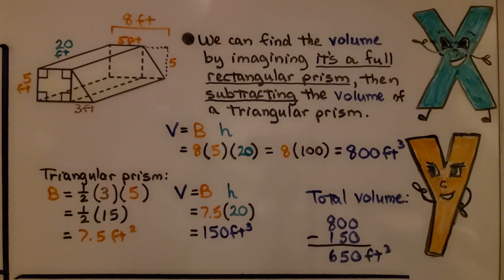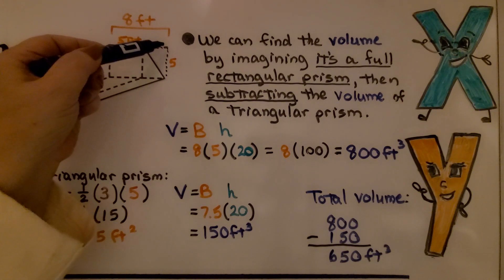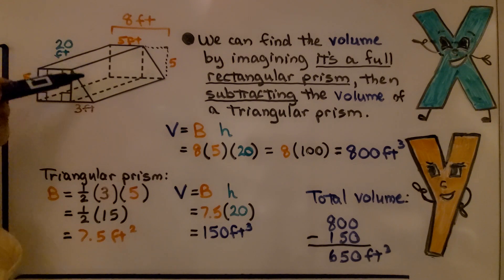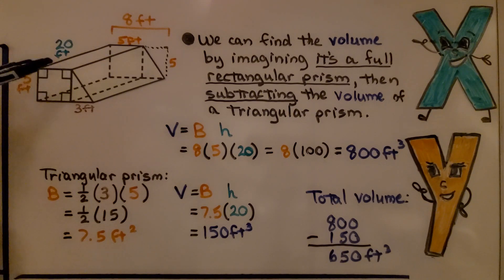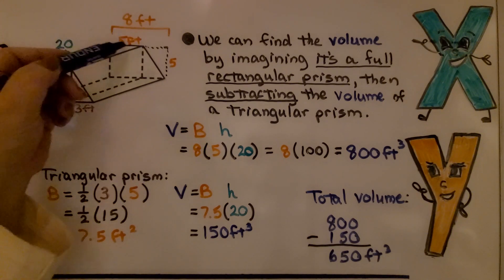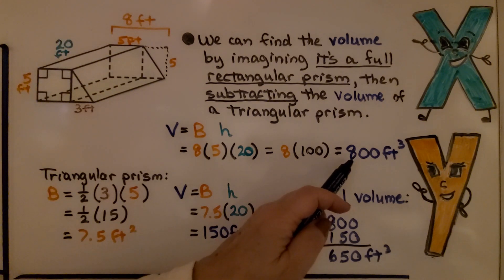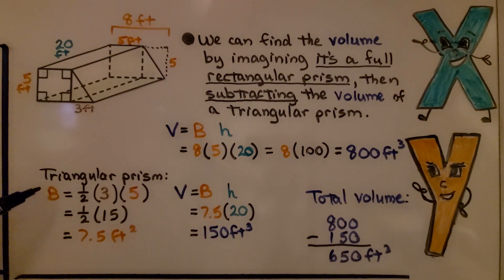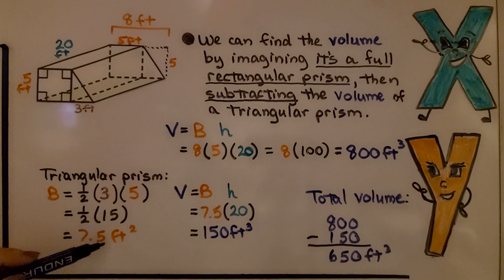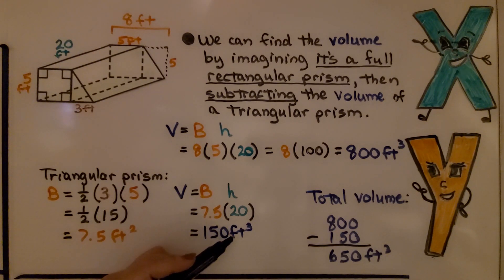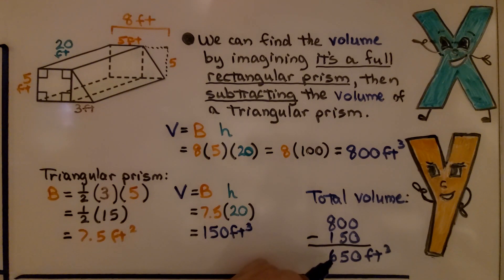We can also find the volume by imagining it as a full rectangular prism and subtracting the triangular prism. If both sides came all the way out, we'd have one big rectangular prism. With five plus three equaling eight across, times five, times a twenty-foot height, we get eight hundred feet cubed. We subtract the triangular prism — half times three times five times twenty — which is one hundred fifty feet cubed, and we still get six hundred fifty cubic feet. Same answer, just a different approach.